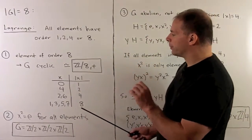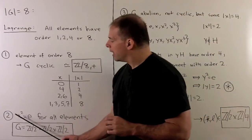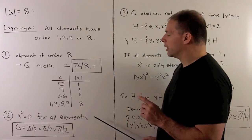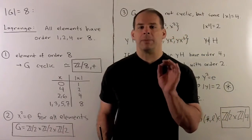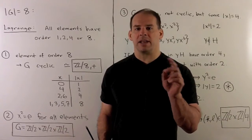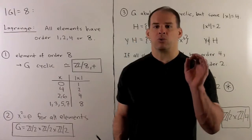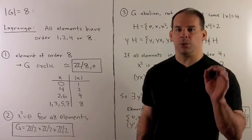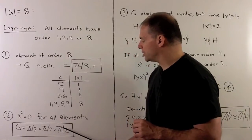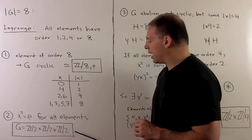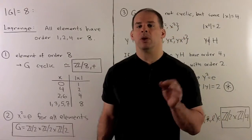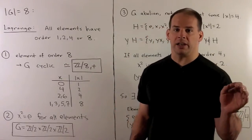Next case: suppose x squared is the identity for all elements in the group. We've seen before that implies our group is abelian. And because every element that's not the identity is order 2, we can write this as a product of Z_2s: Z mod 2 cross Z mod 2 cross Z mod 2, which has 8 elements. Note we have 7 elements of order 2 and 1 element of order 1, the identity.